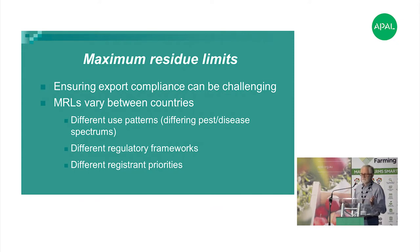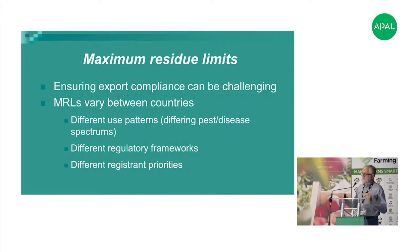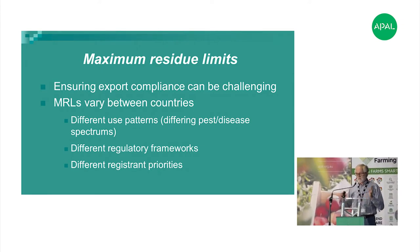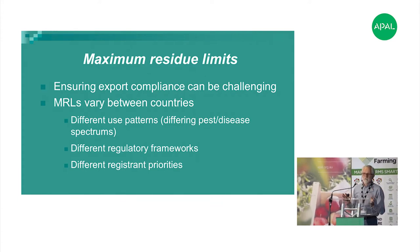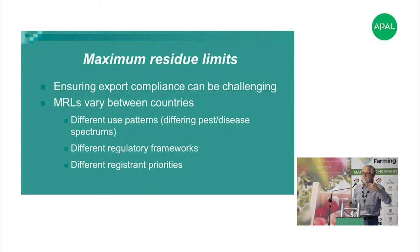There can be a number of reasons for that. There are different use patterns, different pests and diseases. They may not have, like in the case of Europe, fruit fly — at least not yet. There can be different regulatory frameworks, which is a significant issue in terms of a lot of the markets that Australia exports to. And there can be different registration priorities, which can have a significant impact. I'll go through each of those to give you a feel for why some of these MRL disparities occur.